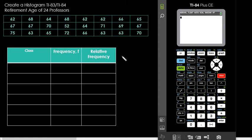Hi, in this video we're going to learn how to create a histogram using either the TI-83 or TI-84 graphing calculators. The commands are the same for both, so you can use this instructional video for either. I'm using the TI-84 Plus Color Edition, and for this situation it's the same thing.